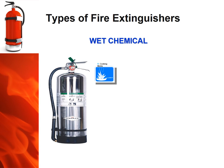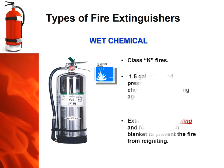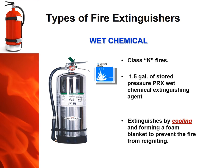The last extinguisher discussed today is used for class K fires — a relatively new extinguisher used in commercial kitchens. It contains 1.5 gallons of stored pressurized PRX wet chemical agent, with a discharge time of about 40 seconds and a maximum effective range of about 10 to 12 feet. It fights fires by cooling and forming a foam blanket to prevent reignition.